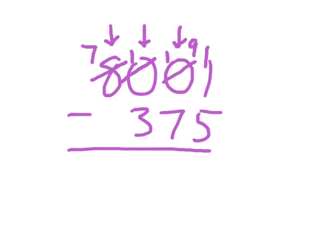When that 10 hundreds became 9 hundreds to regroup over there to that tens place, and then it's just like before. 11 minus 5 is 6. 9 minus 7 is 2. 9 minus 3 is 6. And 7 minus 0 is 7. Where the answer is 7,626.